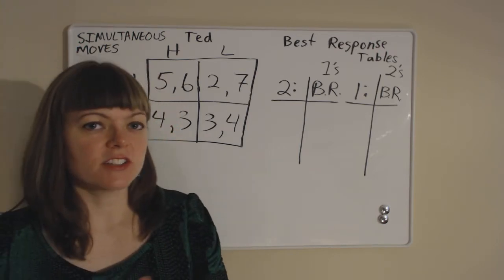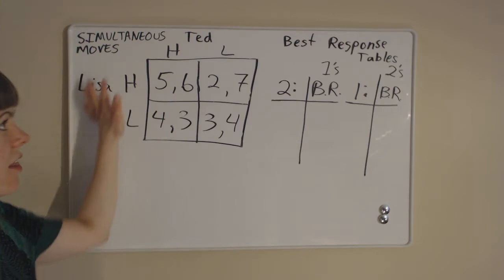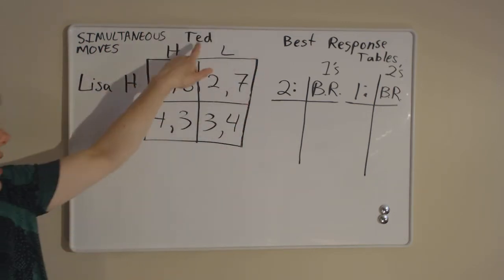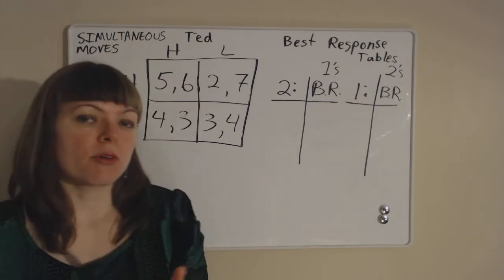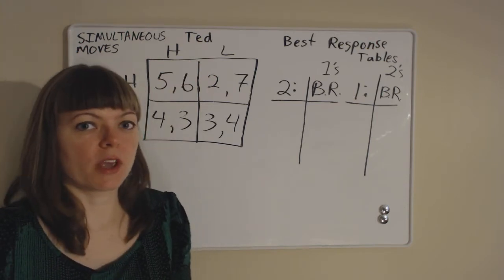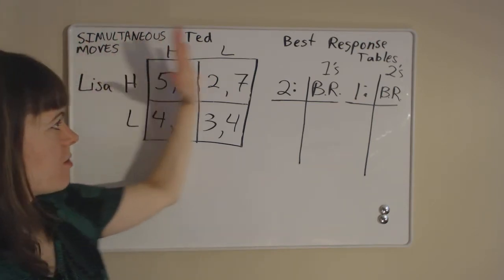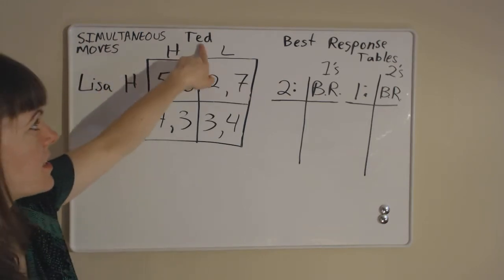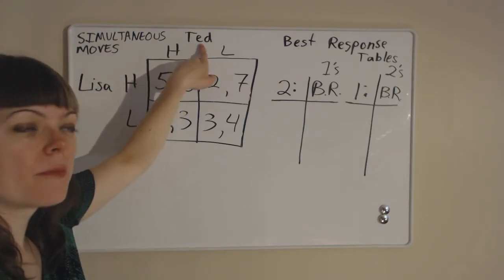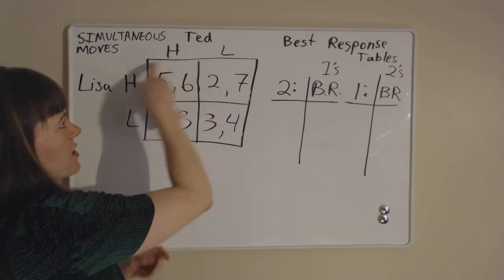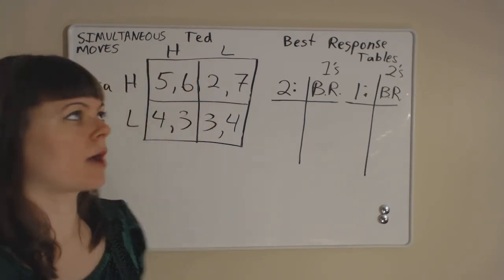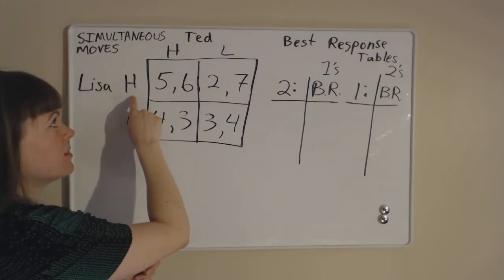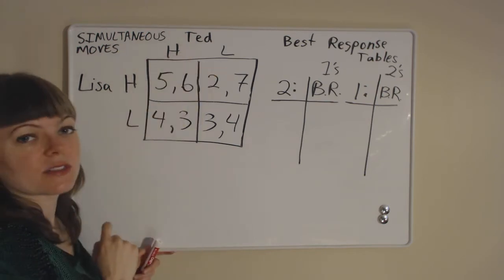The first thing you have to do is know how to read this payoff matrix. We have two players, Lisa and Ted, and we number them from left to right, just like we read. So Lisa is player number one and Ted is player number two. Each payoff box is associated with a particular outcome — this box here is when Lisa chose the high price and Ted chose a high price as well.